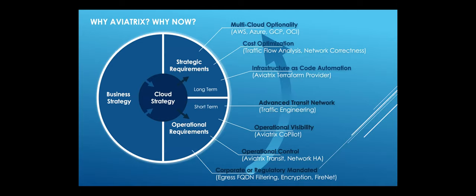From an Aviatrix perspective, the cloud networking strategy sits at the center. The business strategy is the most important aspect. A lot of customers are looking at short-term initiatives, but the longer-term ones are the ones that are really key to enabling true digital transformation. The area we're going to focus on today is infrastructure as code and automation. We build labs all the time that customers can access at no cost on our platform, and we just built a brand new Aviatrix lab entirely through infrastructure as code using Terraform.